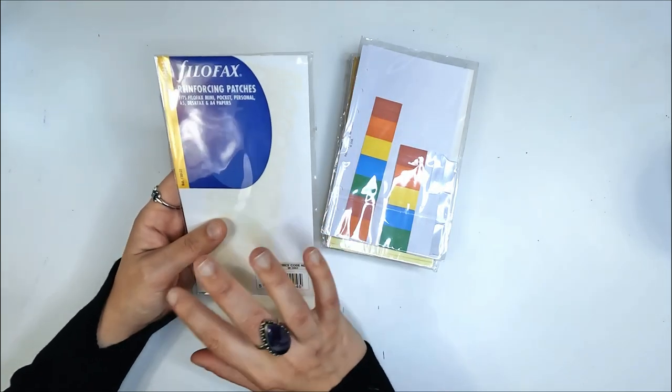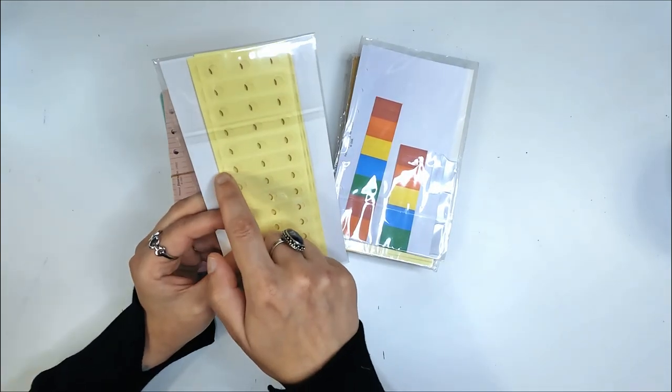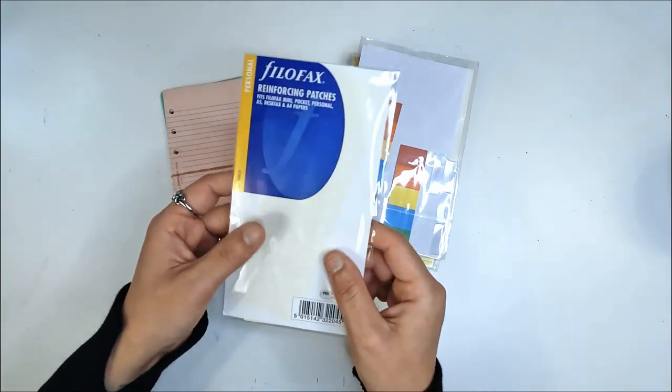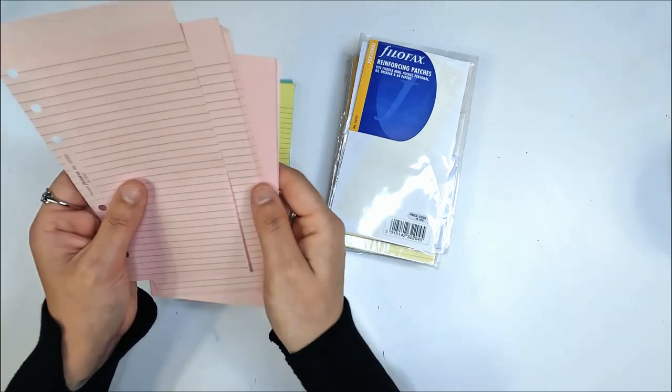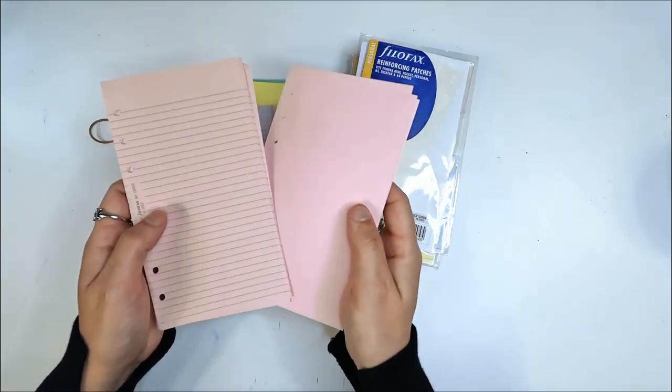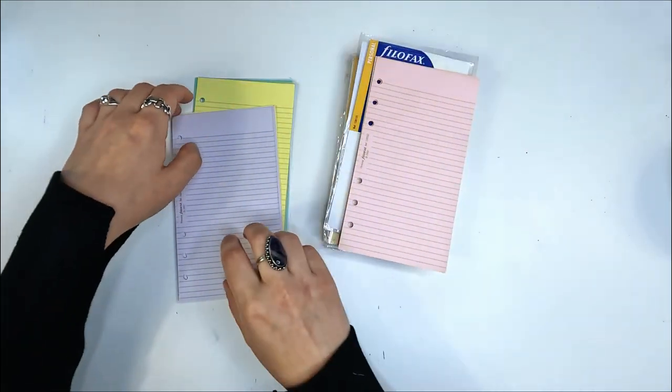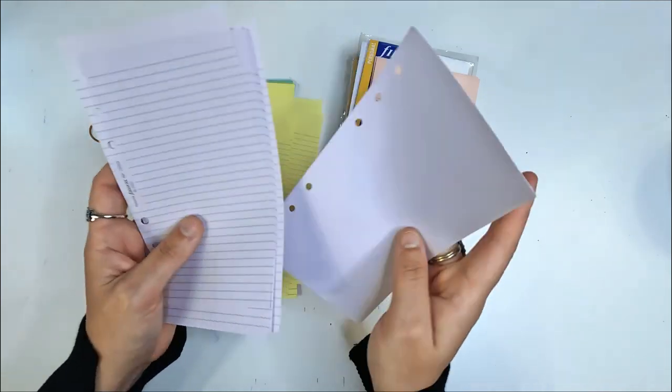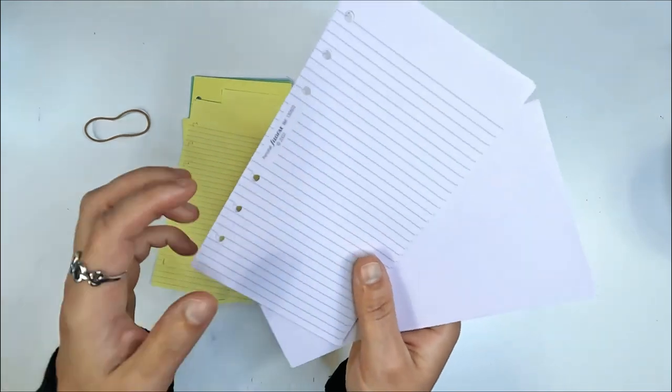So you can get reinforcing patches that don't come from Filofax. I like that the Filofax ones have the three holes per sticker, so it's just less work really. Then we got this little pile here. We've got lined paper and plain paper in pink. They're dated 2002. The lovely lilac color in lined and in plain. Purple's my favorite color, so I'm quite happy with these, and they're also dated 2002.